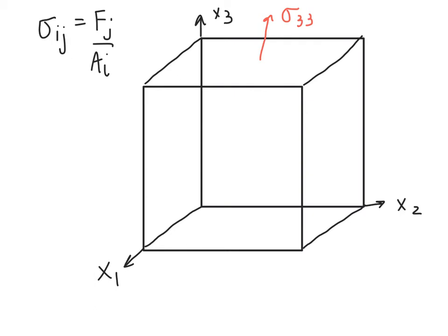Then we can define this sigma 32. This is the stress acting on the 3 face in the 2 direction. So, in the case where the subscripts are mixed, those are our shear stresses.